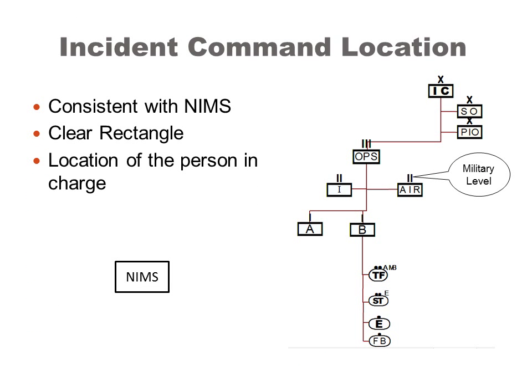Incident Command Locations are shown by a clear rectangle. These features note the location of the person in charge of a section, branch, group, division, or at the command level. The marquees on the top of the symbol are optional, showing what level the feature is compared to the military.